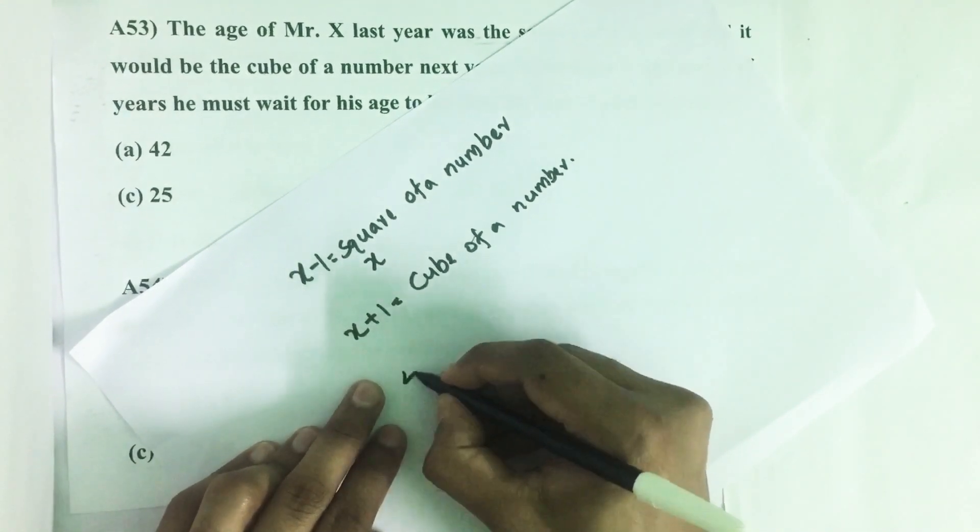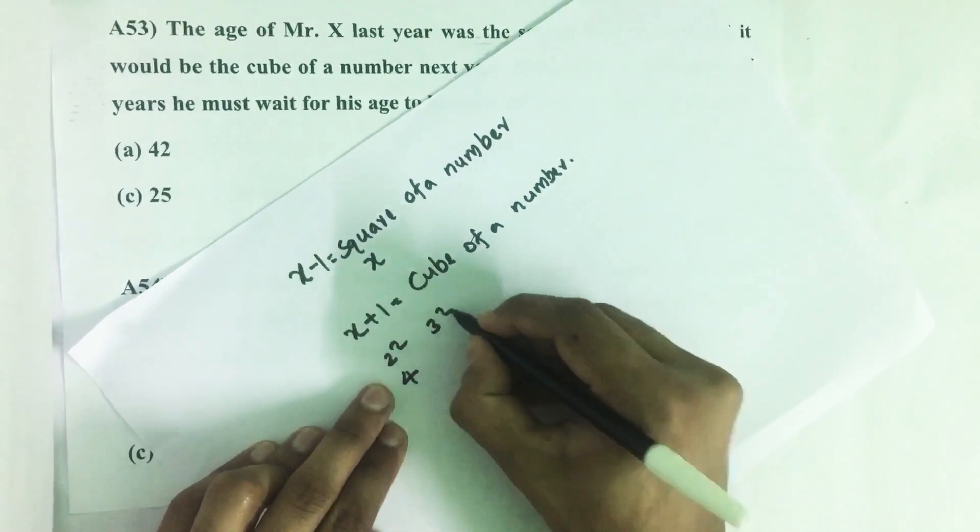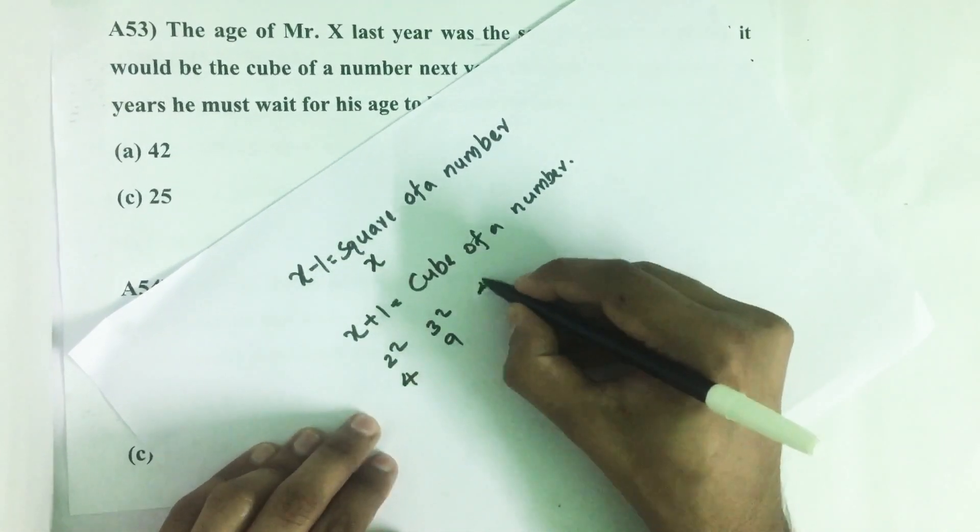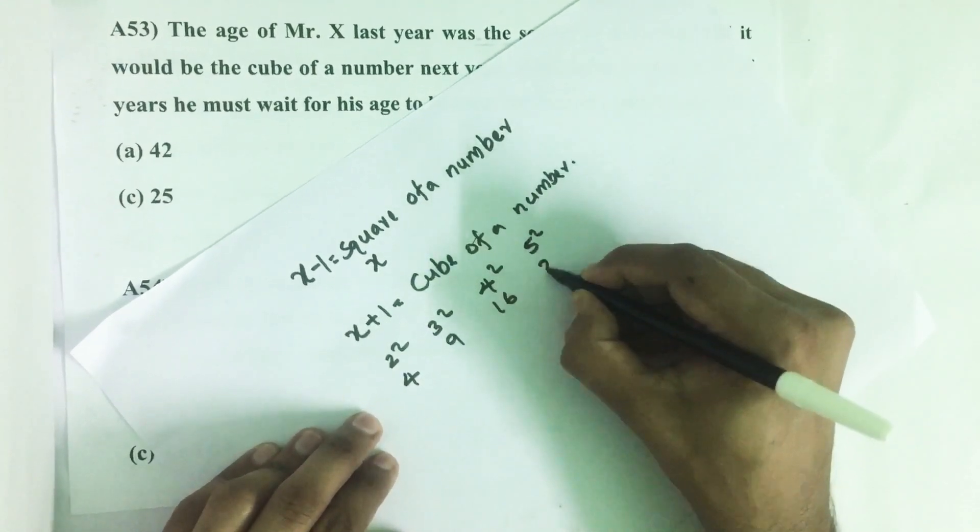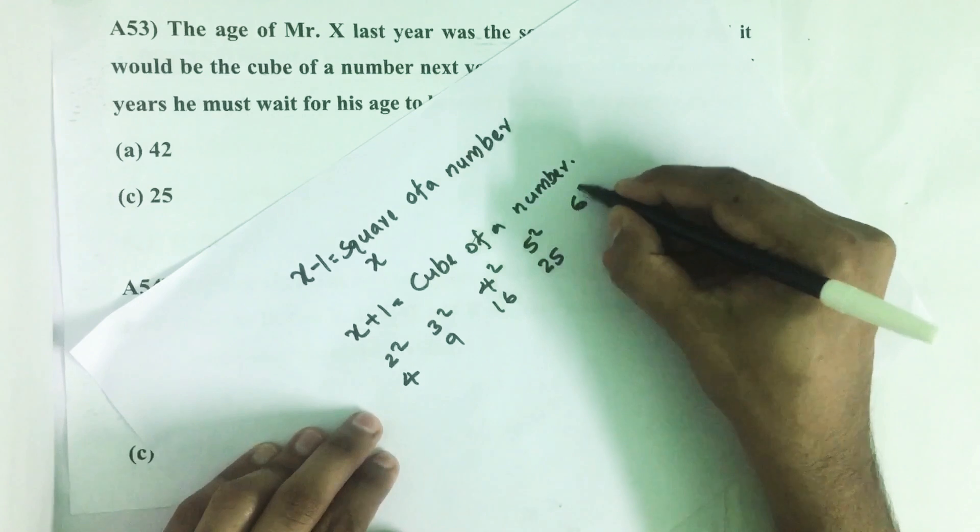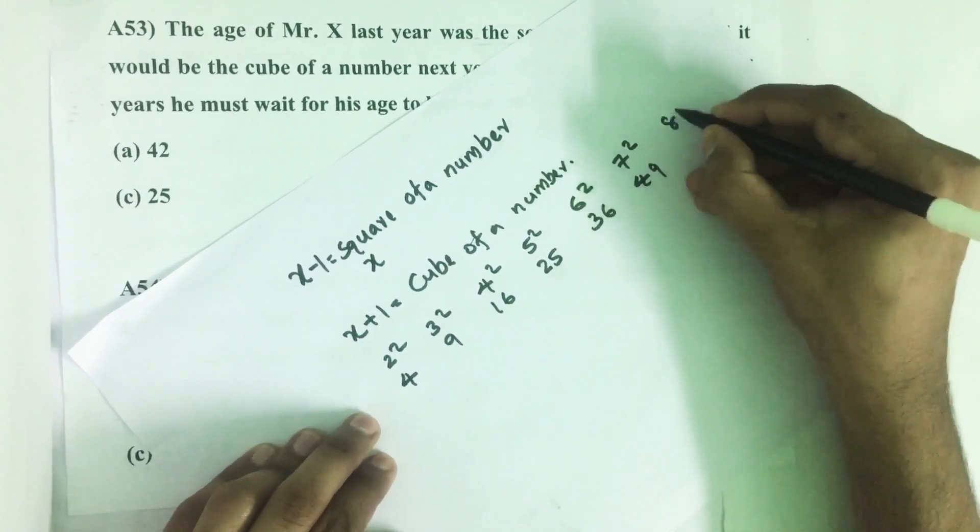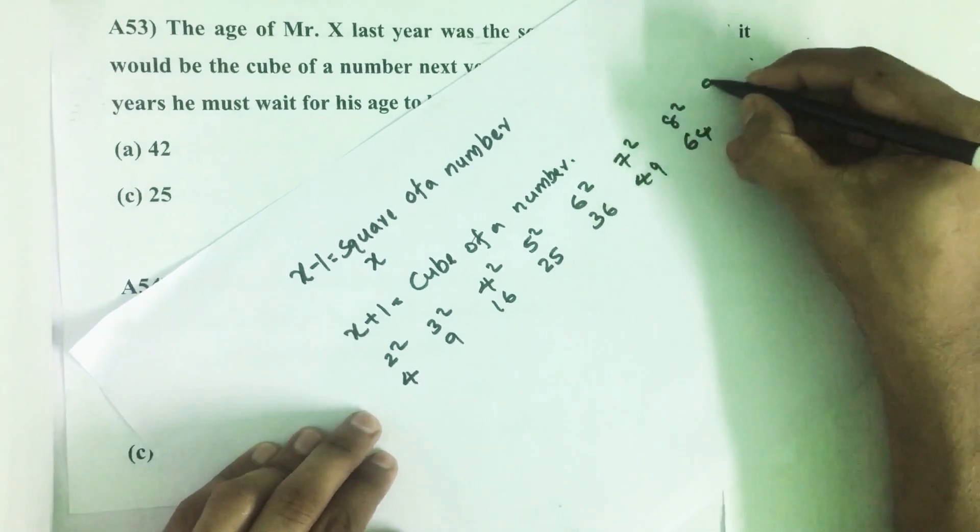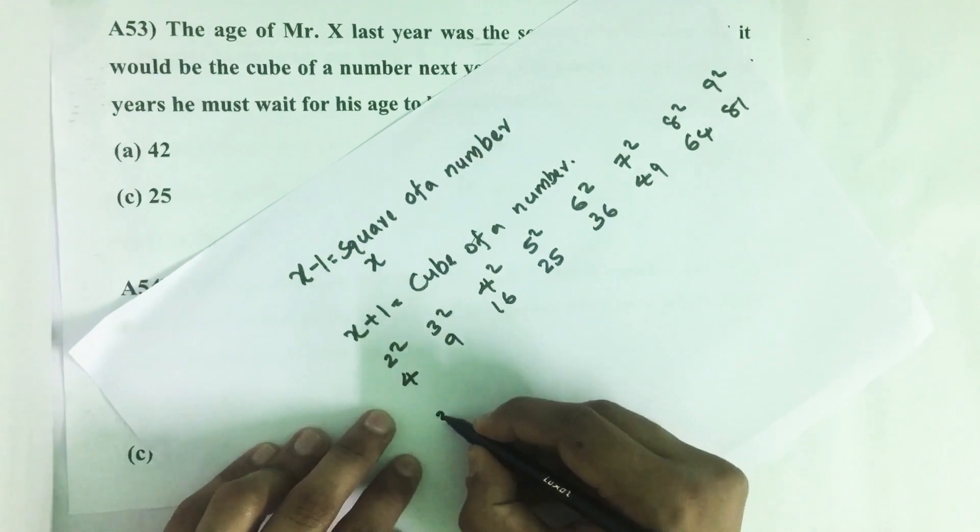We write 2 squared equals 4, 3 squared equals 9, 4 squared is 16, 5 squared is 25, 6 squared is 36, 7 squared is 49, 8 squared is 64, 9 squared is 81.